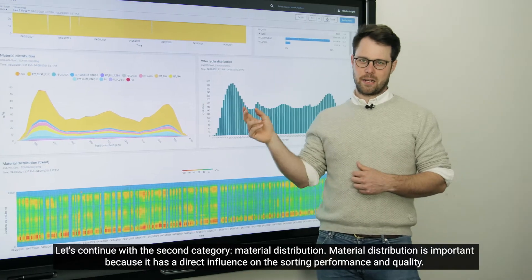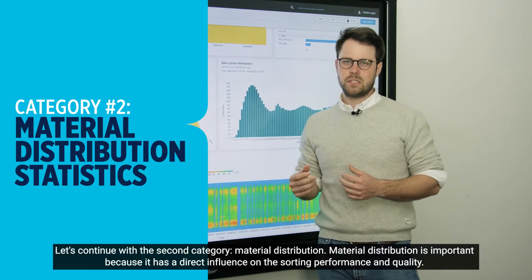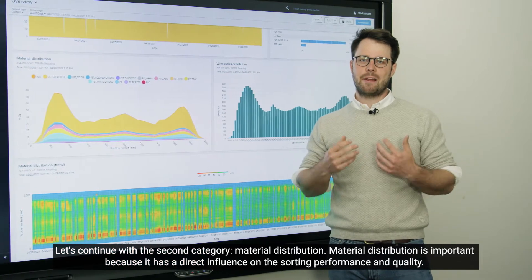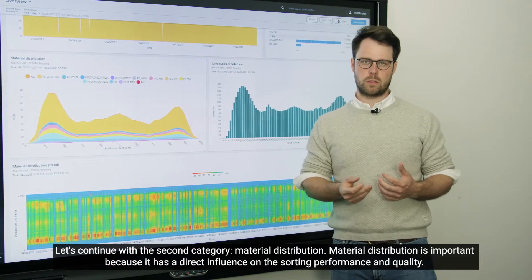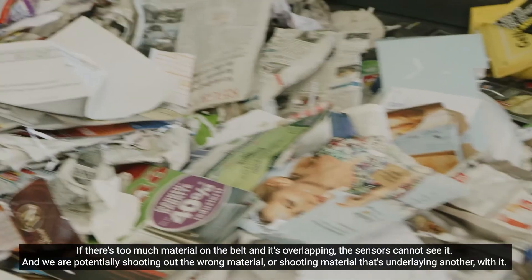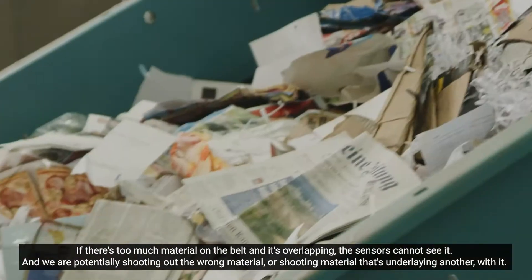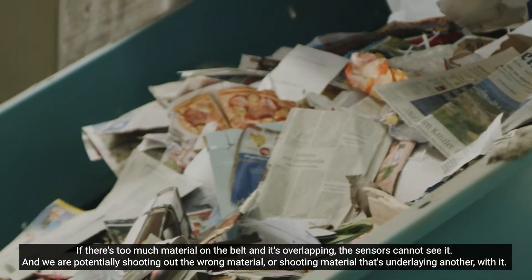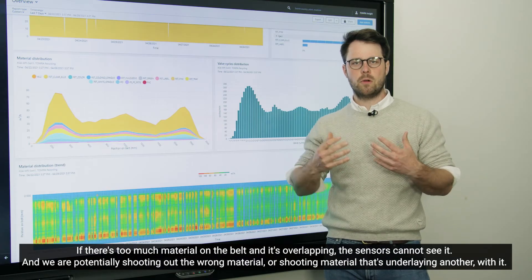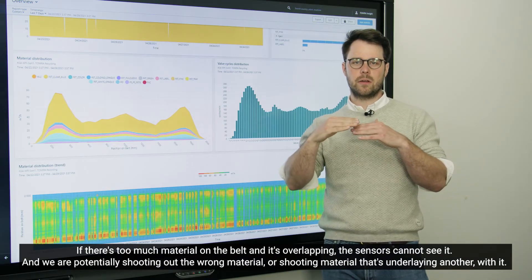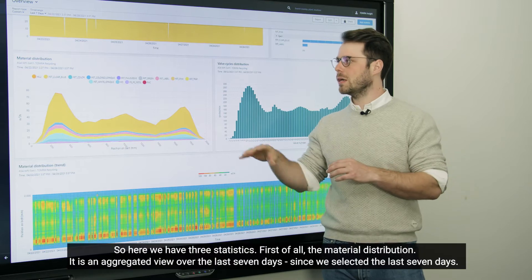Let's continue with the second category: material distribution. Material distribution is important because it has direct influence on the sorting performance and quality. If there's too much material on the belt and it's overlapping, the sensors cannot see it, and we're potentially shooting at the wrong material or shooting material that's underlaying another with it.